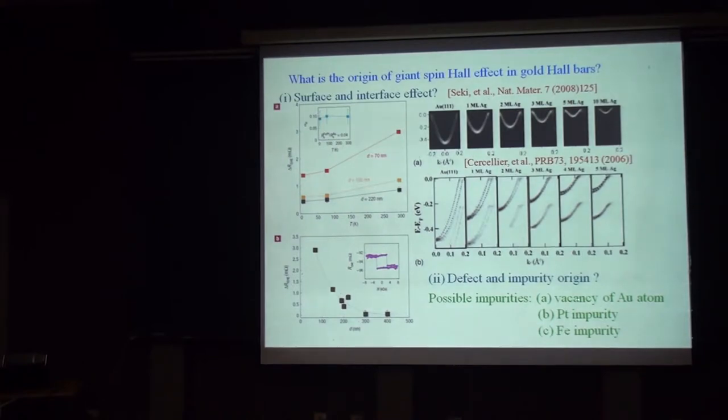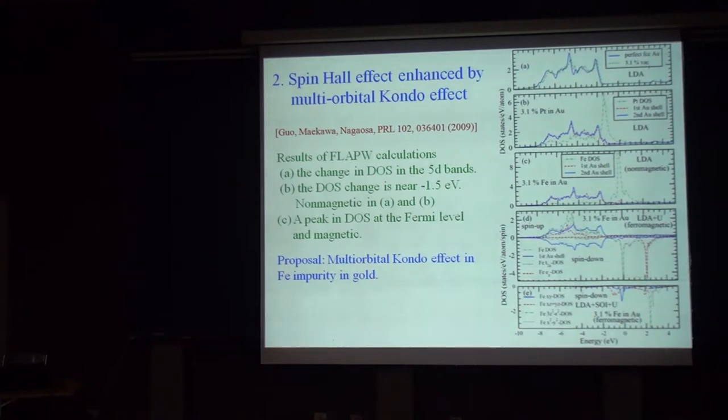Here, I show you, I consider vacancy, you knock out one gold atom. Or you replace one gold atom with platinum. Or you replace one gold atom with iron. Now, this is the electronic density I got. You can see that if you knock out one gold atom, the band structure is more or less unchanged. So that cannot be due to gold vacancy. But then you look at the case where one gold atom is replaced by platinum. You can see this impurity bound state occurring here. Very prominent. But it's about 1.5 eV below the Fermi level.